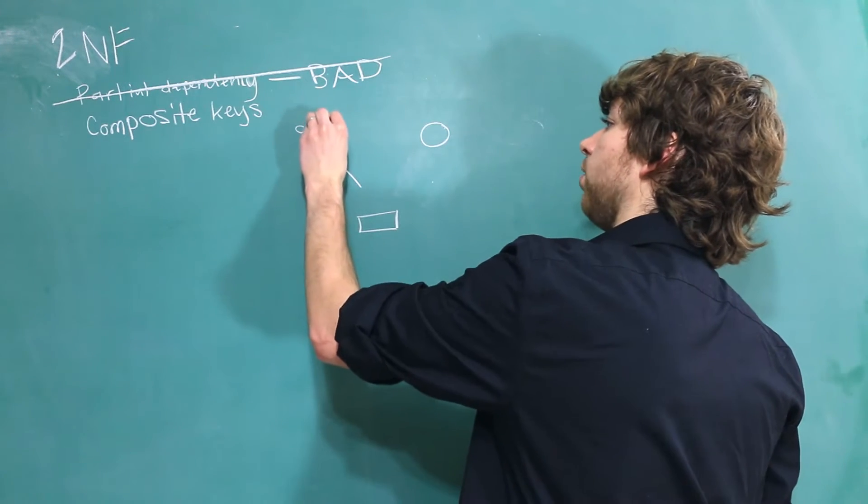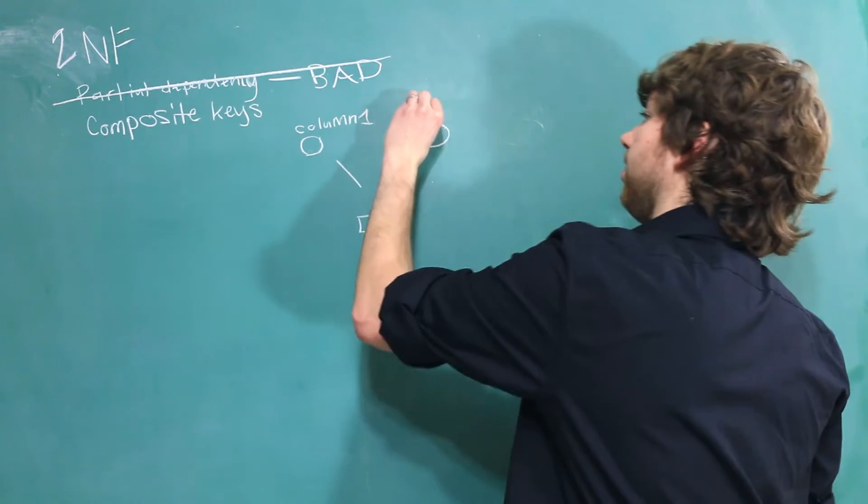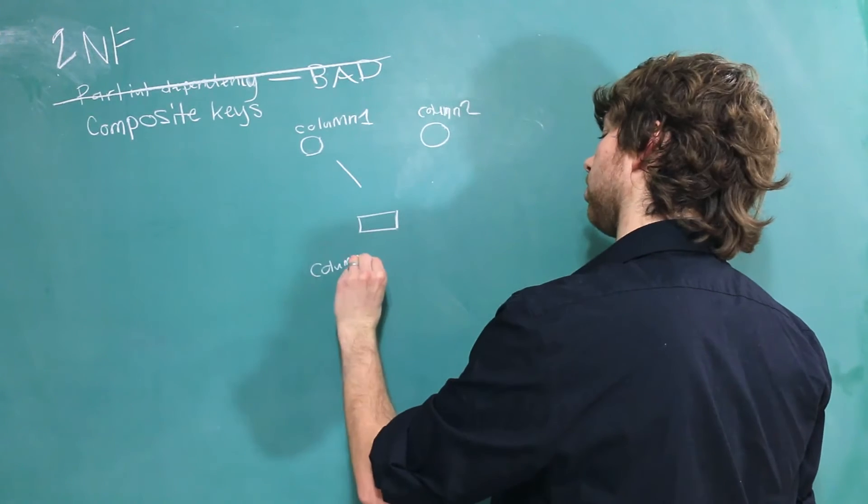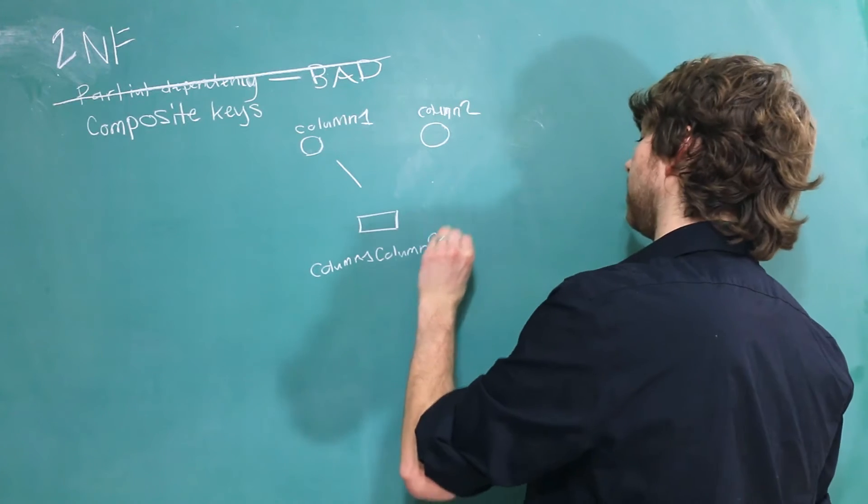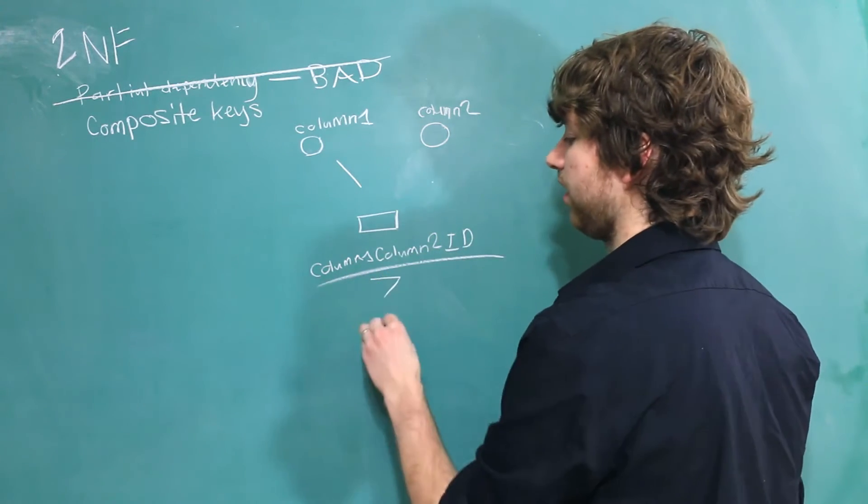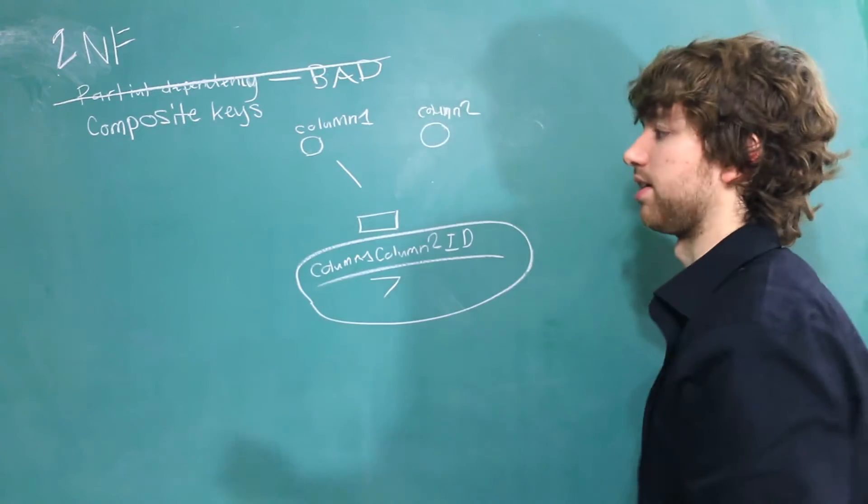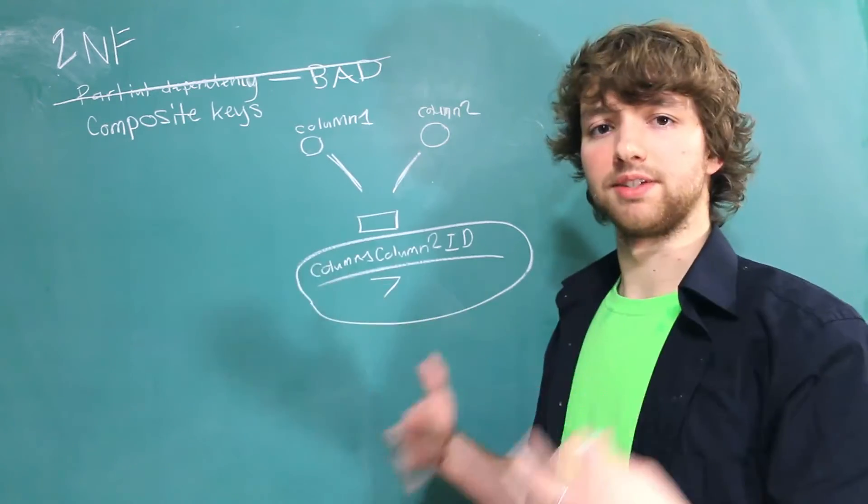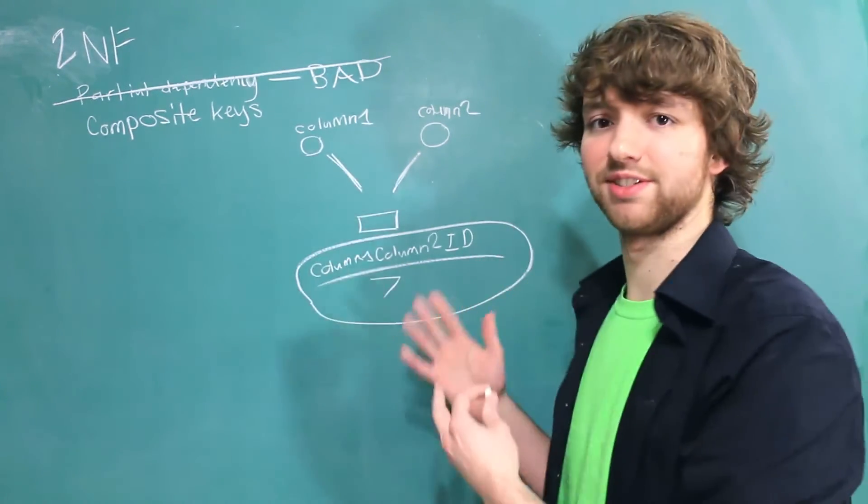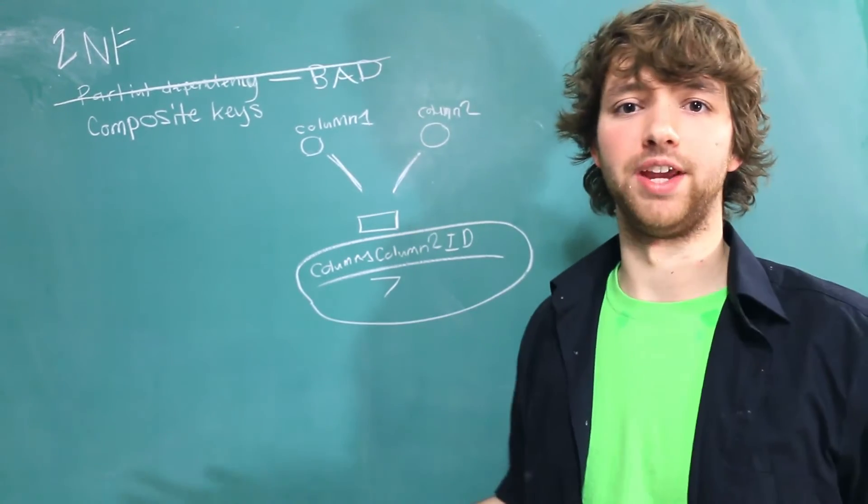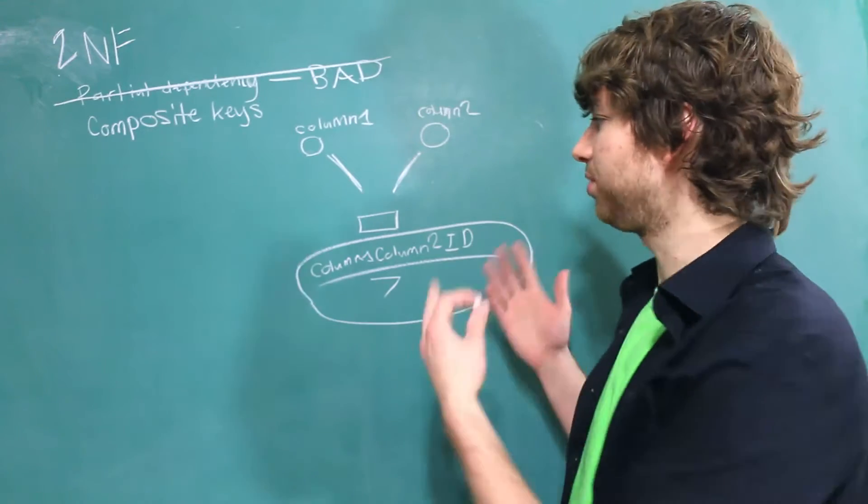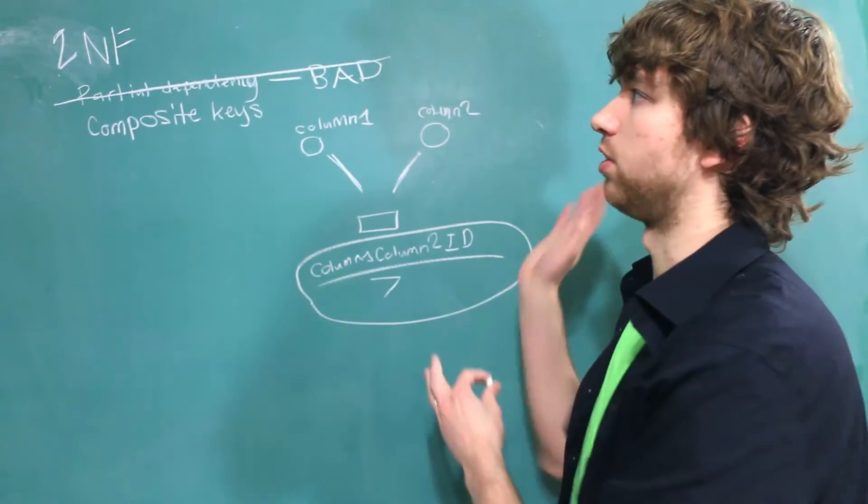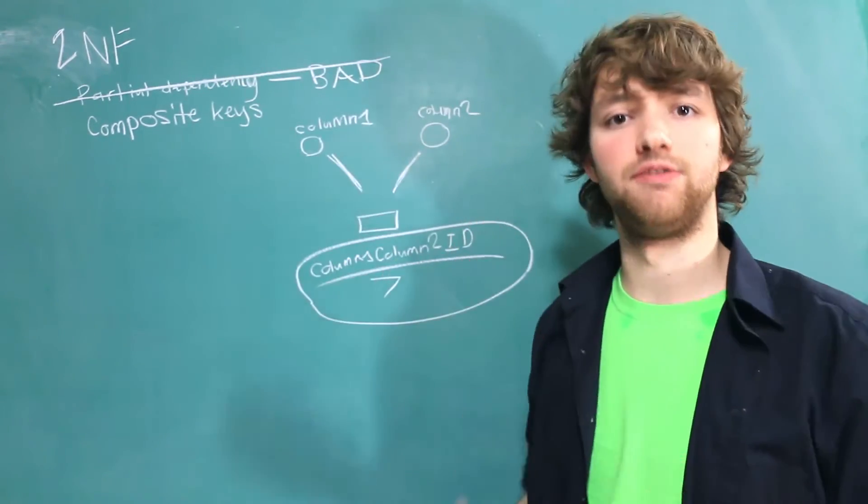You can force yourself to always use a single column for a key. For example, if this is named column one, it's a really awesome name, and this one's column two, instead of having a composite key, in theory, you could just have column one, column two, ID, and then just give it a number. And then this would not be a composite key because it's just one column. That being said, the data in this table should still depend on both of these because that's how the table is set up. You're just gaming the system by adding a new column. It doesn't improve your database any. It just makes it worse. So only add a column if you already know how to design the database.